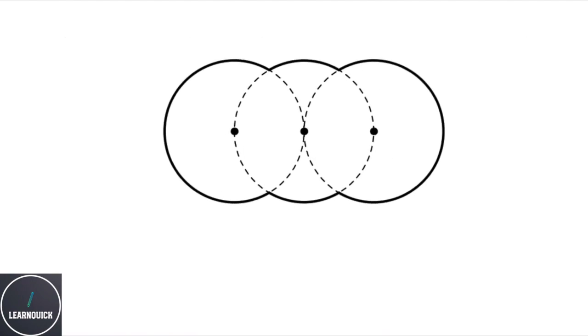Okay, so if we draw the radii for each circle, we can see that they form this shape. And because they are all radii, we can label them all r.